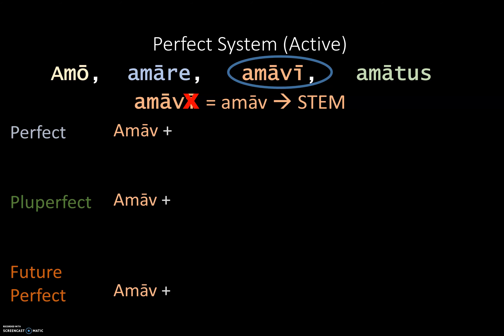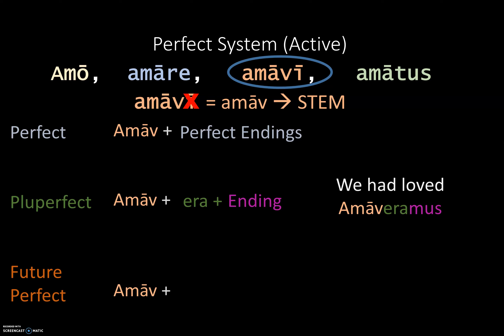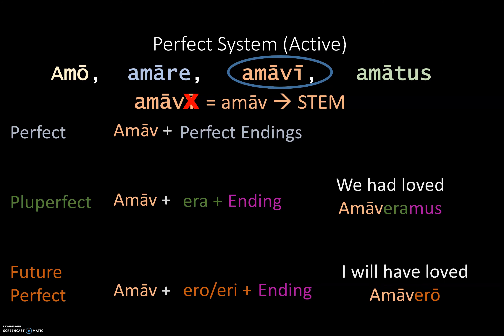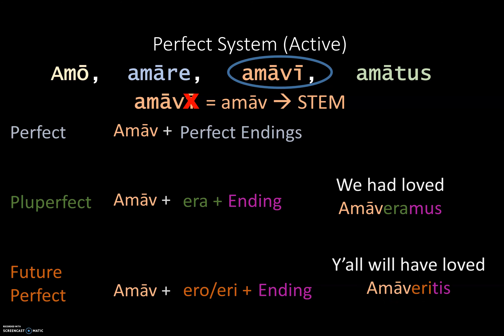We take our perfect stem for all three tenses. For the pluperfect, we add ERA and then our personal endings — for example, AMAVERAMUS (we had loved). For the future perfect, we add ERO in the first person singular or ERI in all other persons, then our ending — giving AMAVERO (I will have loved) and AMAVERITIS (y'all will have loved).